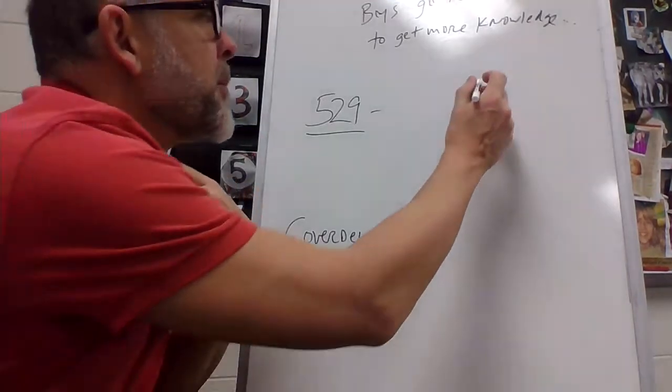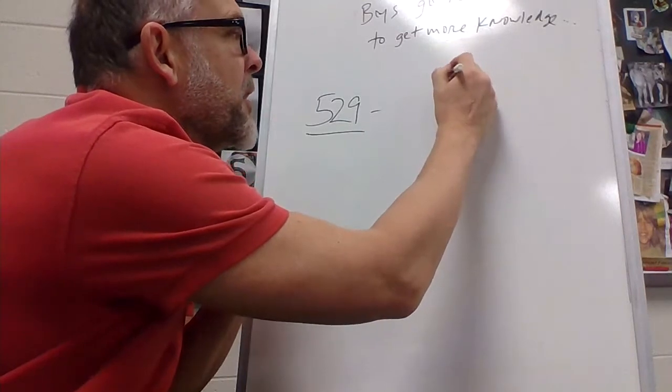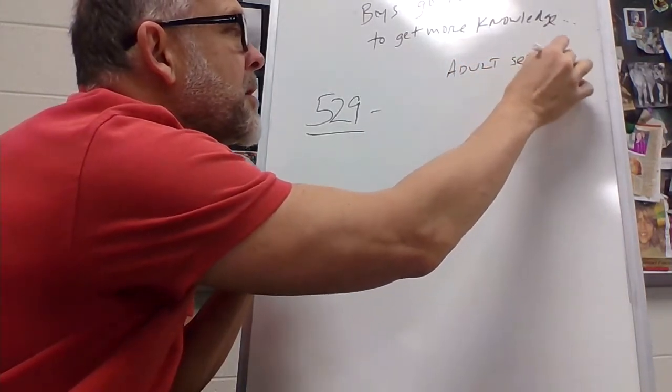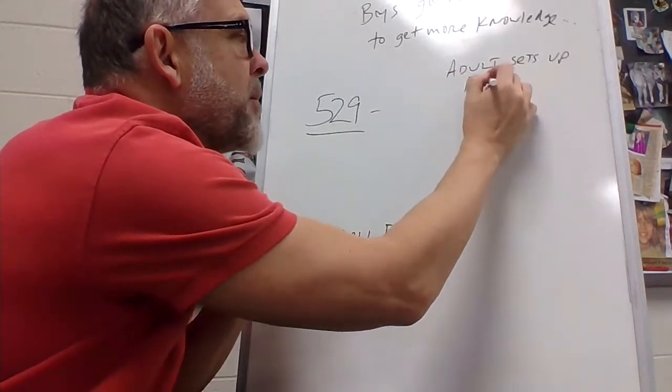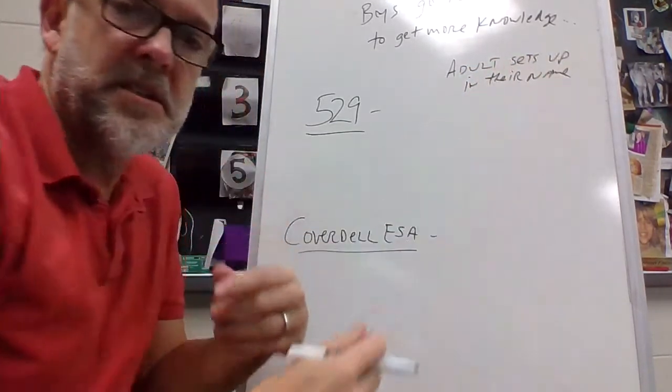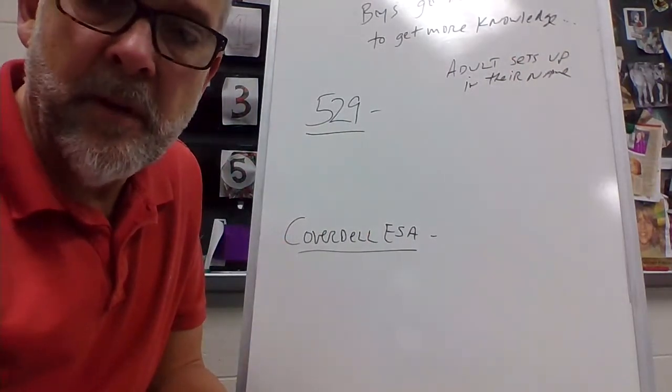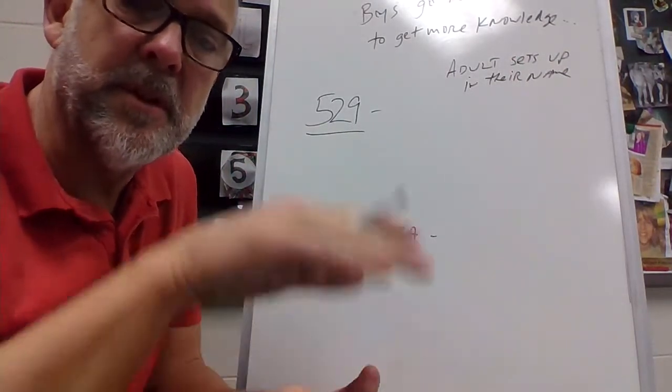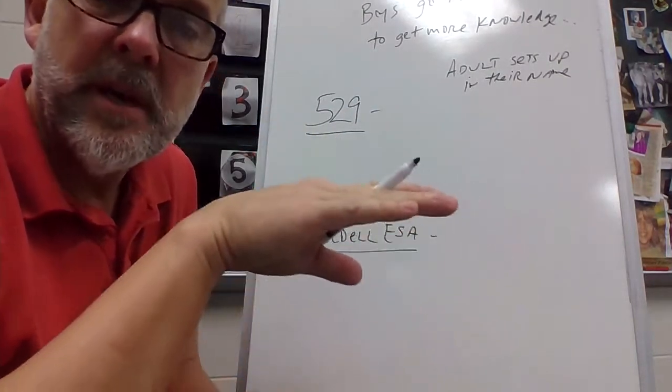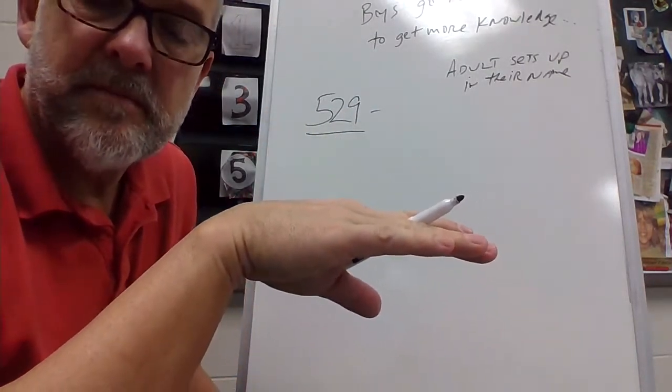In both cases, the adult sets it up in their name. You don't put it in the kid's name, because as soon as you put it in the kid's name, they turn 18 and can spend it however they want. So you set it up in your name and then name the kid or whoever as the beneficiary.